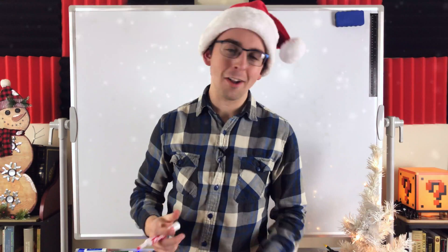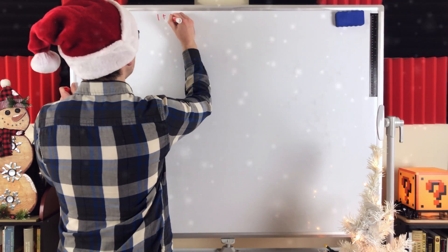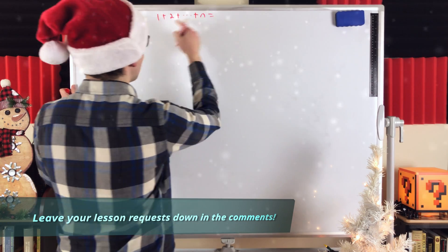How do we calculate the sum of the first n counting numbers? 1 plus 2 and so on, all the way up to n. What's that equal to?